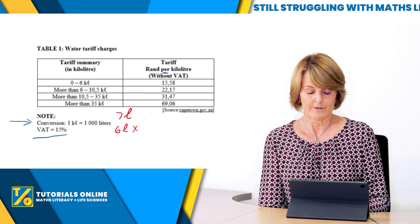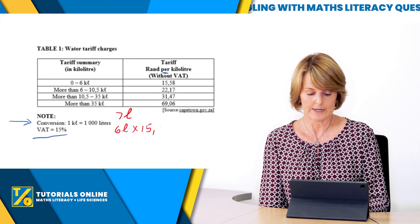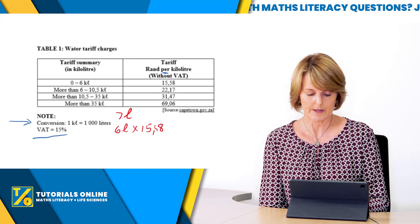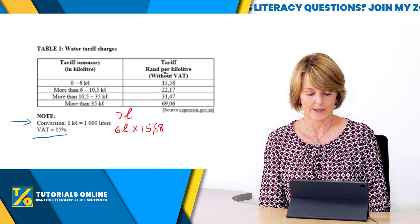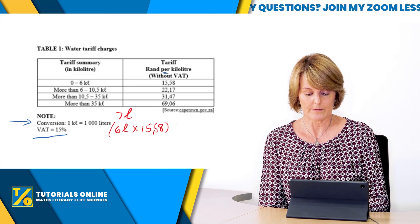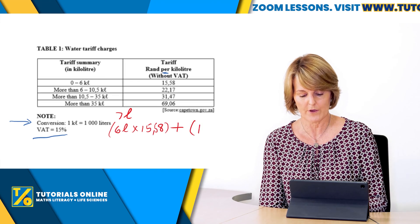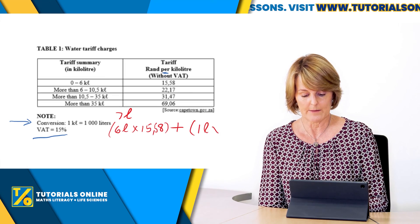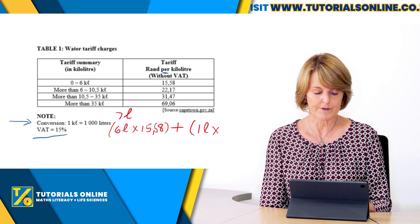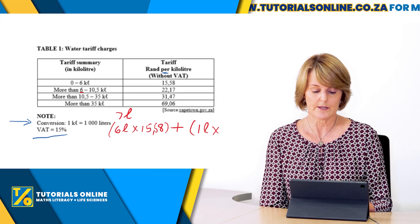You'd pay 15 rand 58 per litre, so you have to multiply by 15 rand 58. And then you've got to look at how much is seven litres more than six litres. It's one litre, so you're going to still have to pay for one more litre but it's above, it's more than six litres, so it's going to be at the new rate here of 22 rand 17.